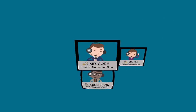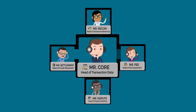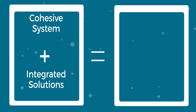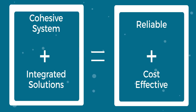Now let's look at a back-office environment that uses the Concourse Financial Software Suite. Notice how each office has a doorway to Mr. Core's center office. Because of Mr. Core's open-door policy, employees have access to one another all the time. In essence, Concourse brings all back-office functions together into one cohesive and integrated system. This allows companies to perform back-office processing and reporting more reliably and cost-effectively.